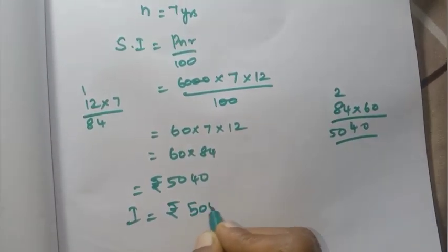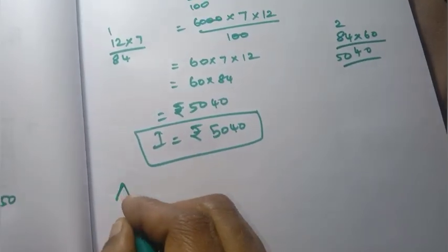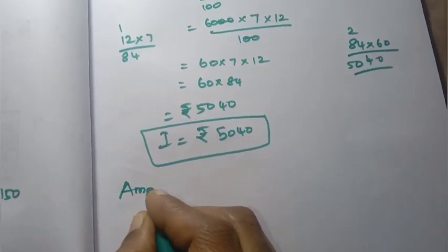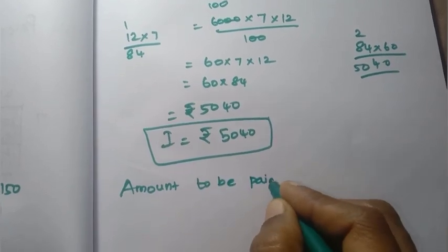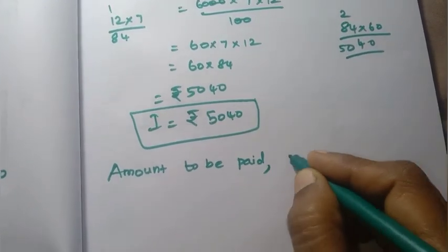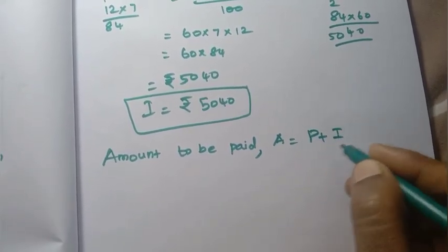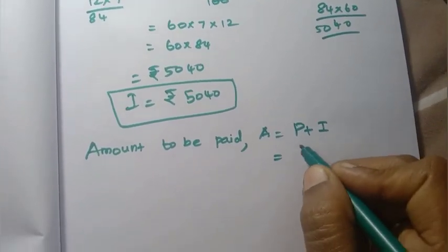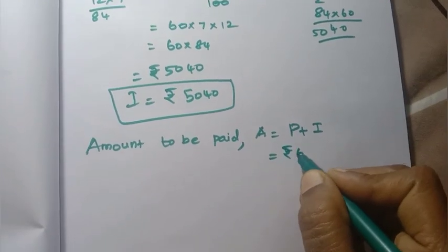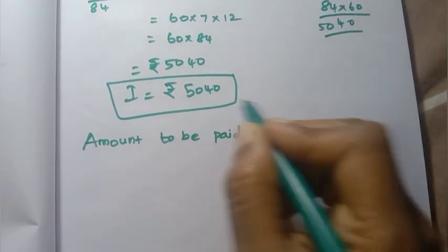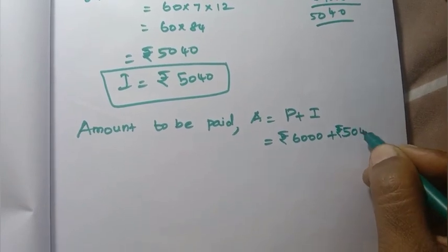5040 interest found out. PNR per annum, number of years — this is the amount to be paid. A equal to principal plus interest.